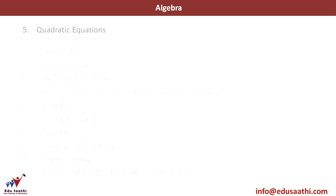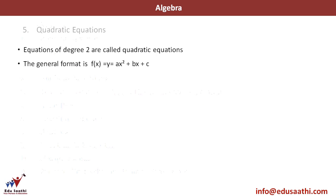Let's start with what is a quadratic equation. A quadratic equation is an equation of degree 2. We've already studied the concept of degree and power in the first lecture. So an equation of degree 2 means the highest power of any variable has to be 2. That is termed as a quadratic equation. In general format, it is written as y = ax² + bx + c. The term ax² means this is the equation of degree 2.